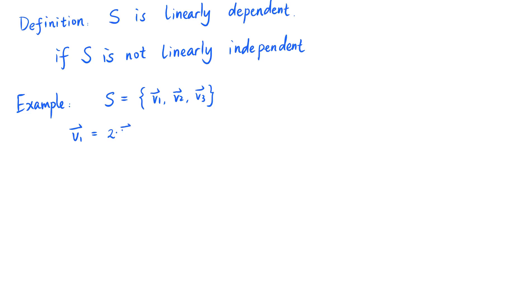let's say v sub 1 is 2 times v sub 2 plus 3 times v sub 3. If this is true, then S is not linearly independent, and therefore S is linearly dependent.